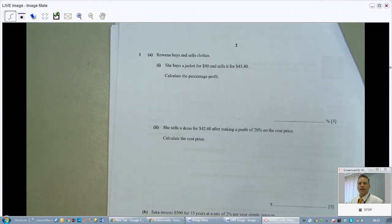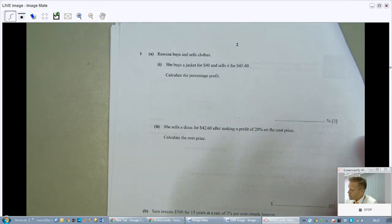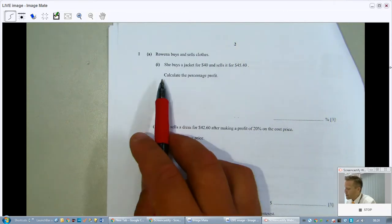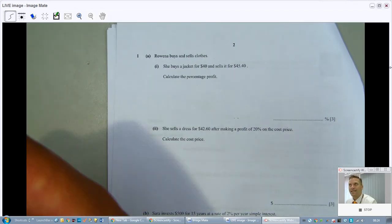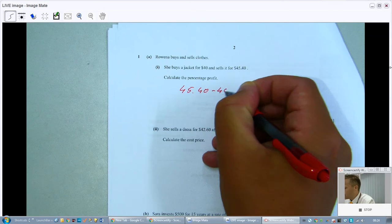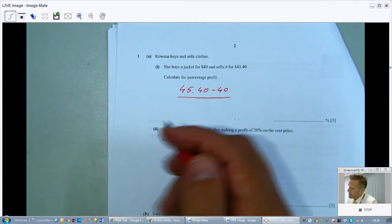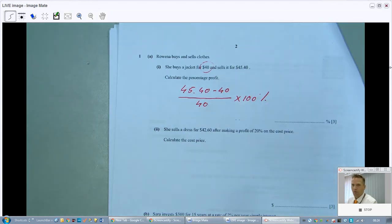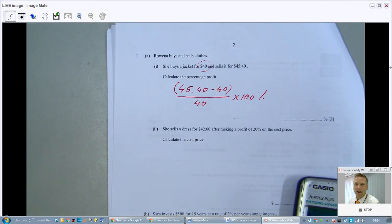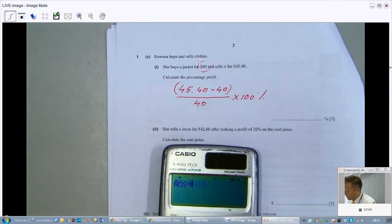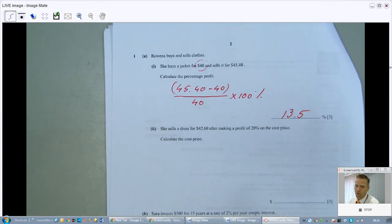Let's get started. And let's make sure this is the best piece of work that we are able to do. Rowena buys and sells clothes. She buys a jacket for $40 and sells it for $45.40. Calculate the percentage profit. Well, a percentage profit, or loss, or increase, decrease, is the change in value divided by the original value. So, in this case, the change divided by the original $40, times 100%. That would be two points for writing that down. And then we just get that third point for the correct answer. 13.5%.